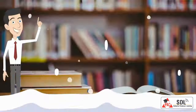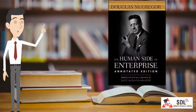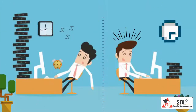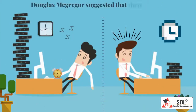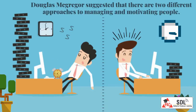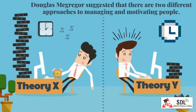In The Human Side of Enterprise (1960), Douglas McGregor suggested that there are two different approaches to managing and motivating people. McGregor called the two management approaches Theory X and Theory Y.